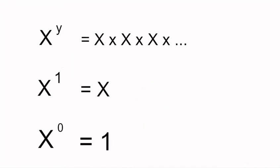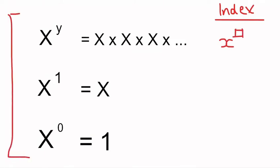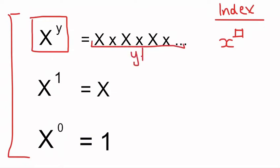The first thing we're going to look at before we talk about zero to the power of zero is a couple of mathematical laws called index laws. An index is just a number to the power of something. We're going to look at three index laws to start with, and the first one is x to the power of y — that means x times x times x, repeated y amount of times.